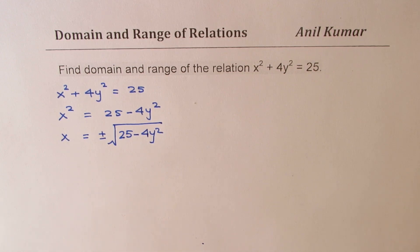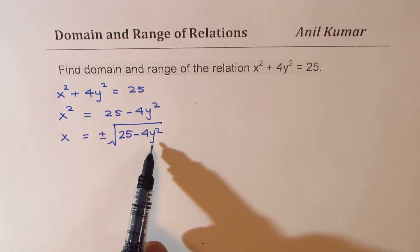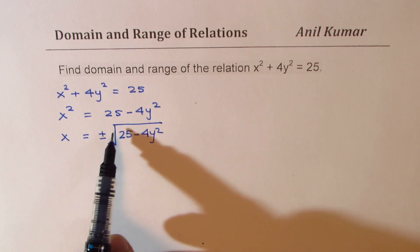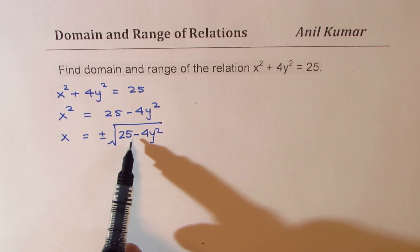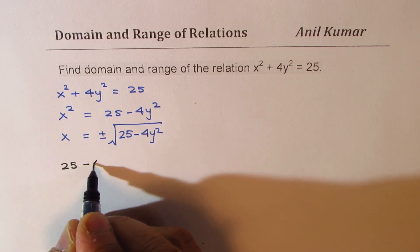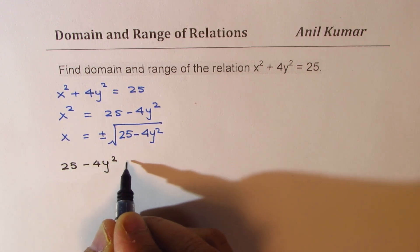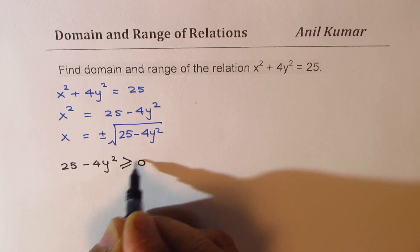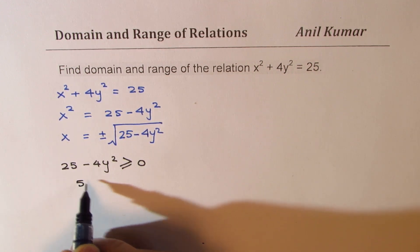Now from here, you can find the restriction on y. Since within the square root, we cannot have a negative number, that means 25 - 4y² should be greater than or equal to 0.